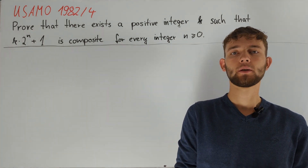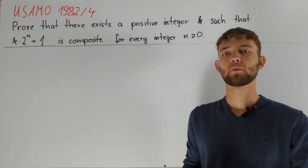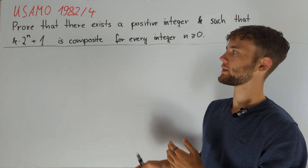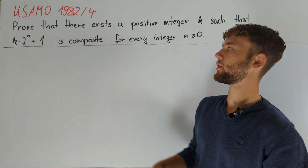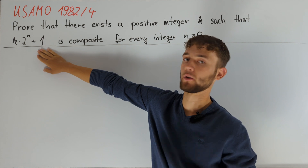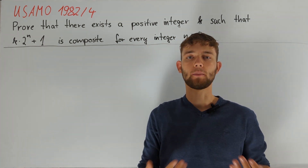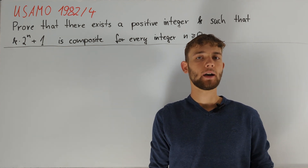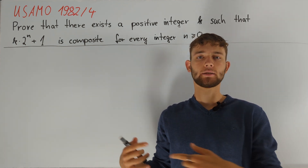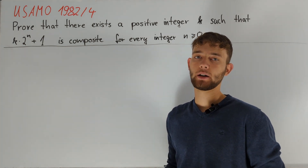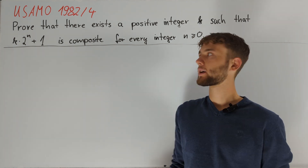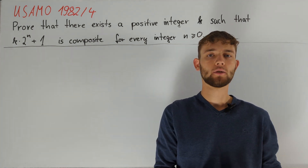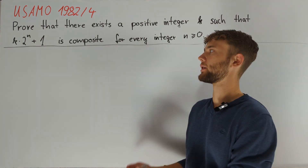We are going to think about this problem in quite a constructive way. In other words, we want to think about what properties k needs to have in order for this number to always be composite. One way to make a number composite is by making it have a small prime divisor p, and in that case, as long as this number doesn't equal p, it will be composite. Note that k times 2 to the power of n plus 1 is always odd, so p equals 2 will not give us anything.